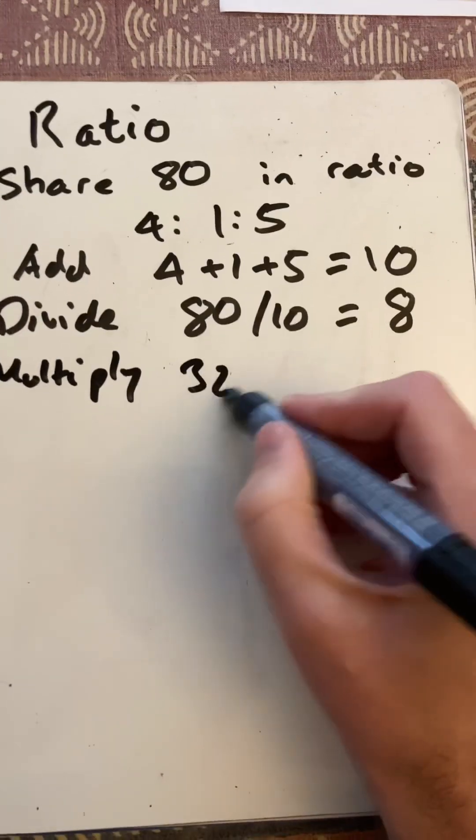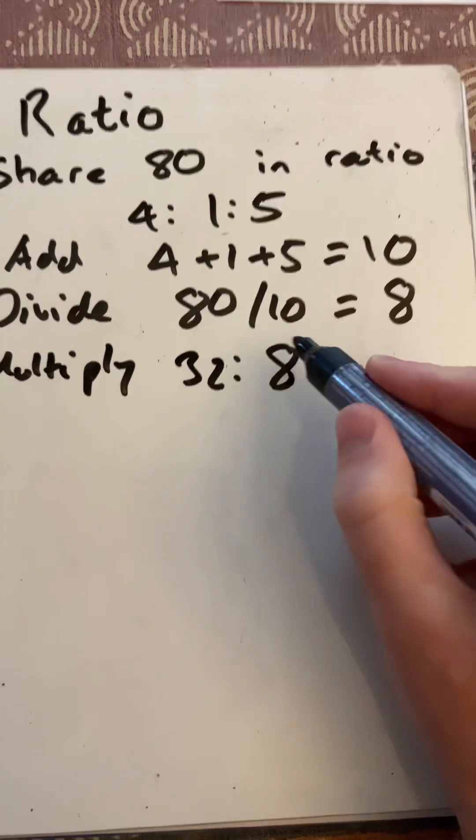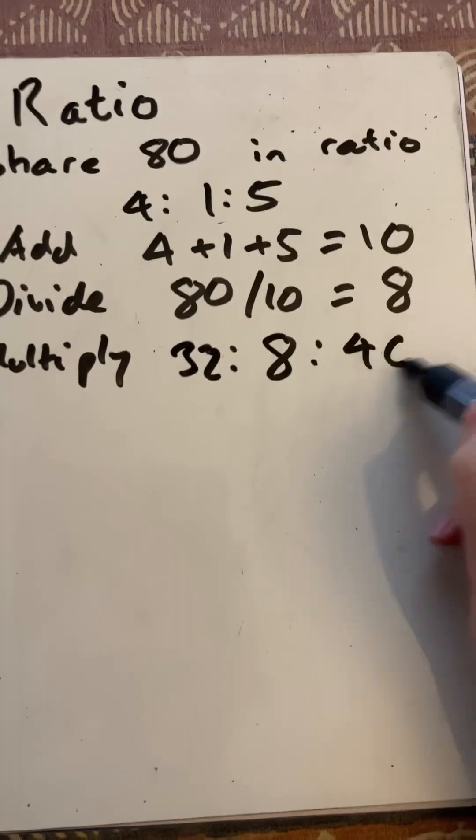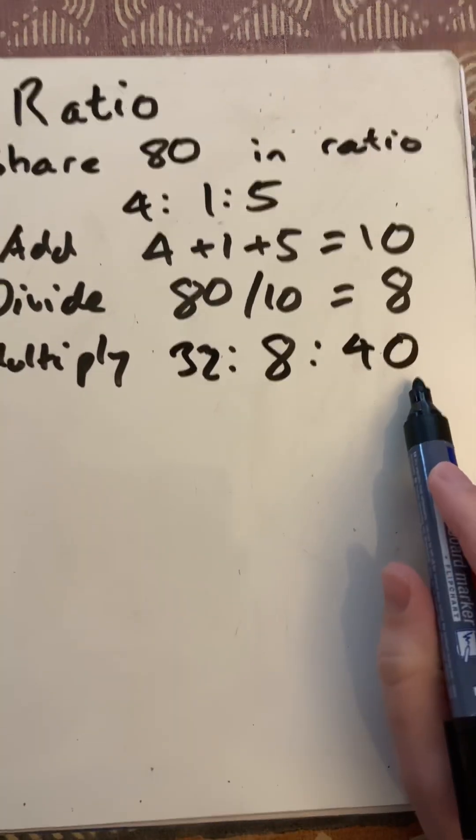So 4 times 8 is 32, 1 times 8 is 8, and 5 times 8 is 40. I can check that adds up to 80: 40 plus 32 is 72, plus 8 is 80.